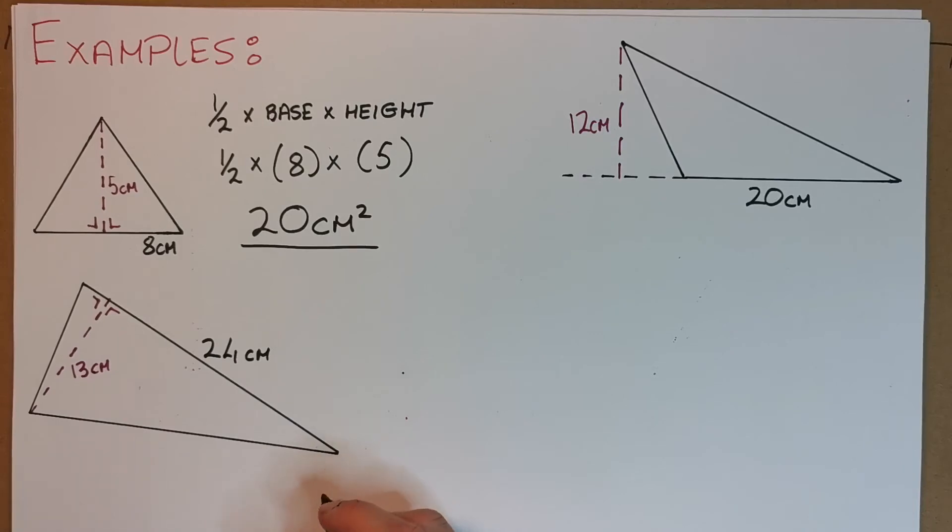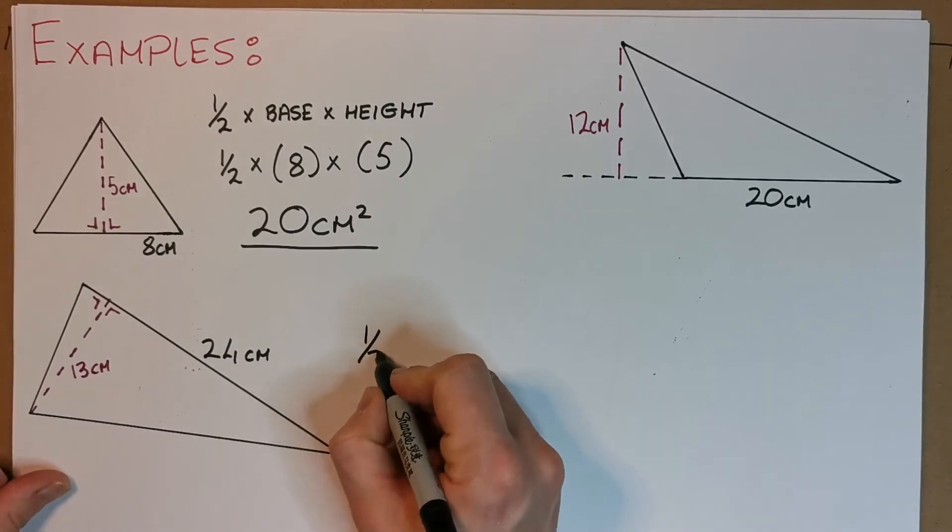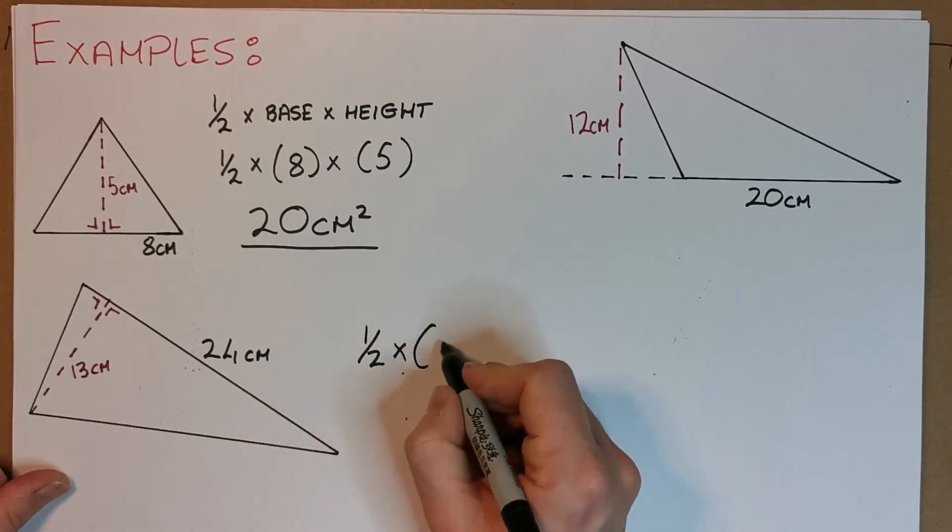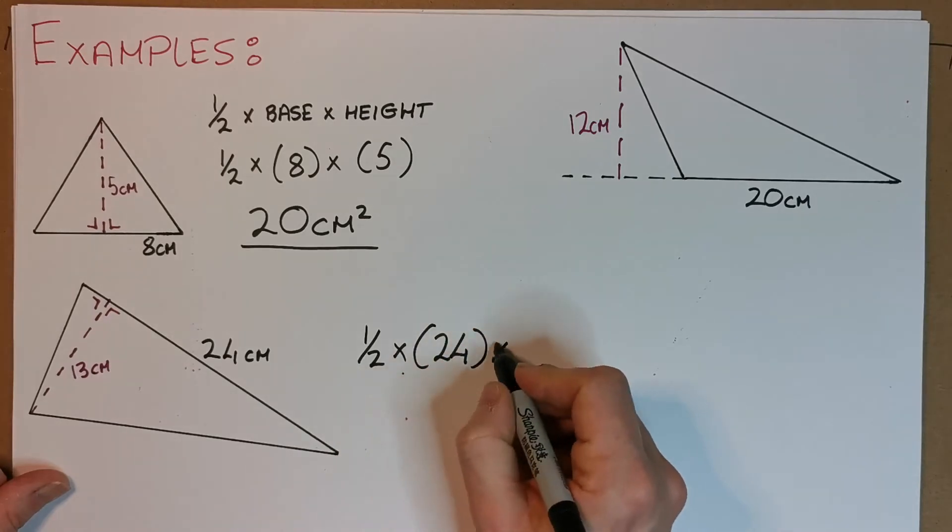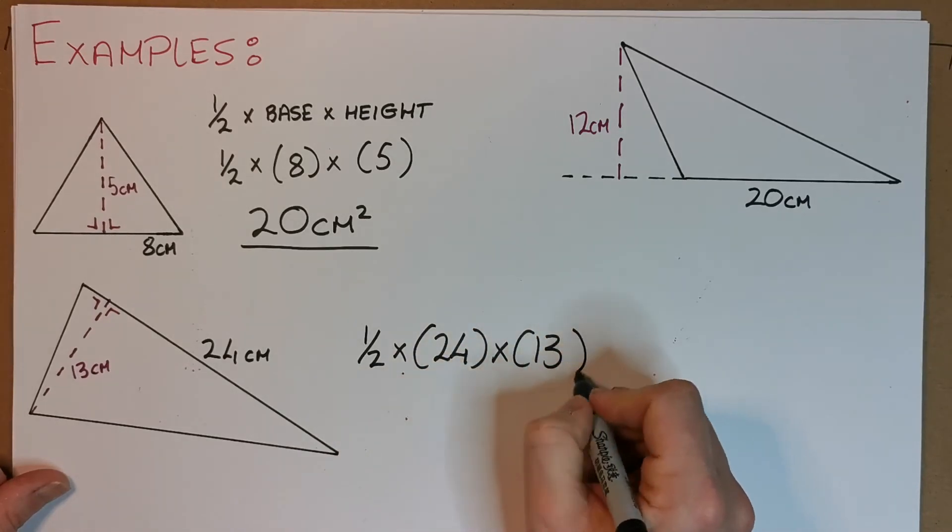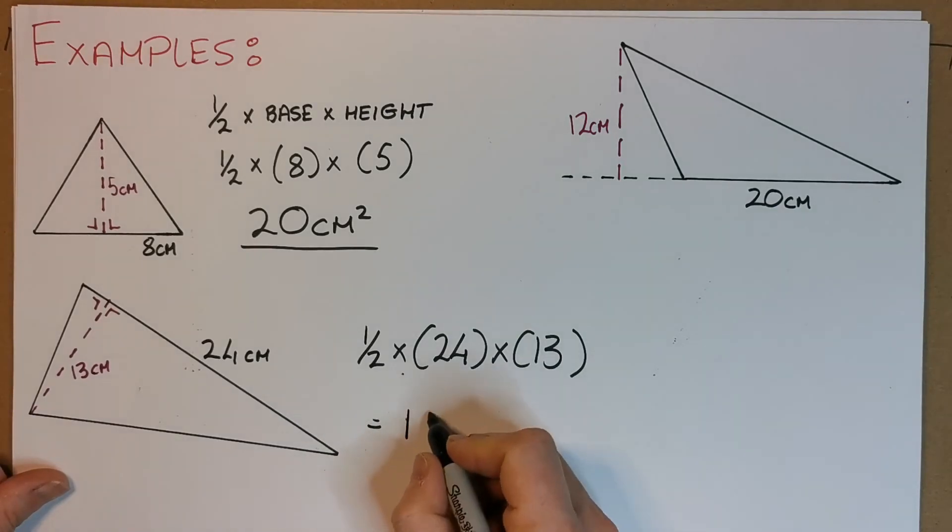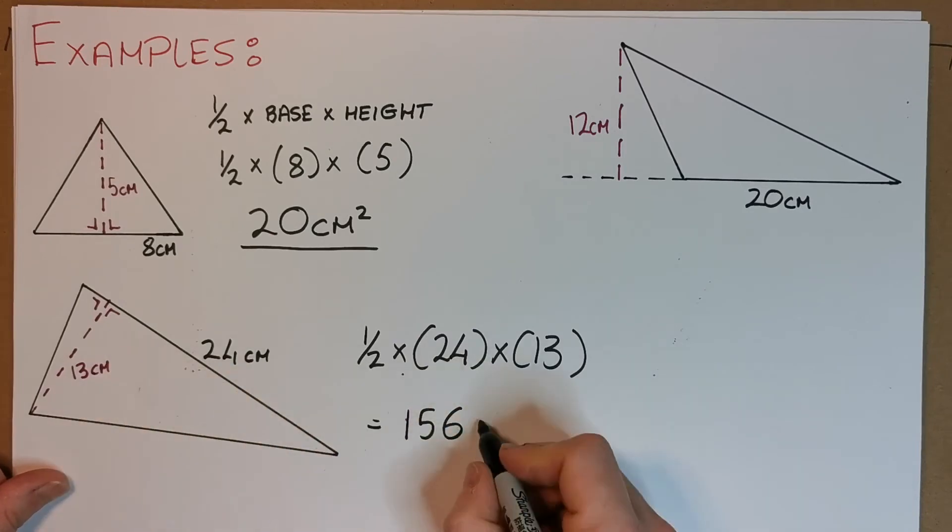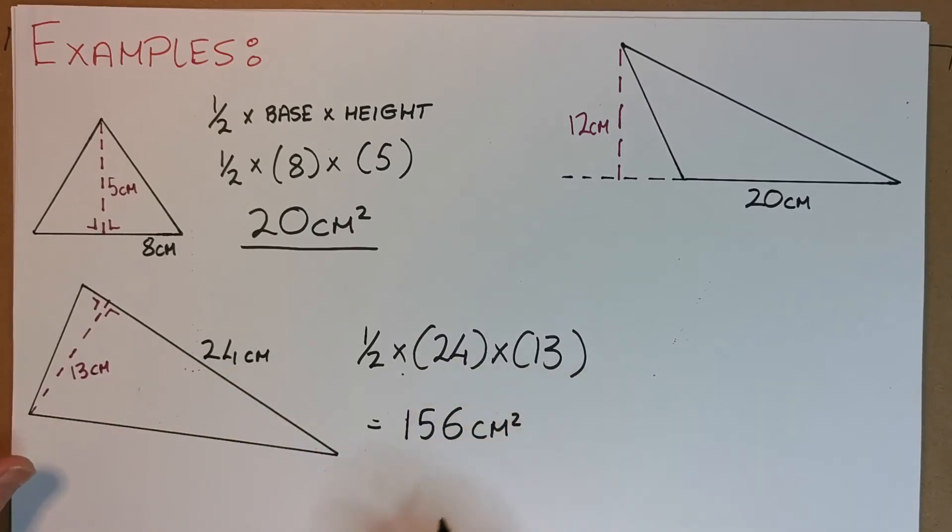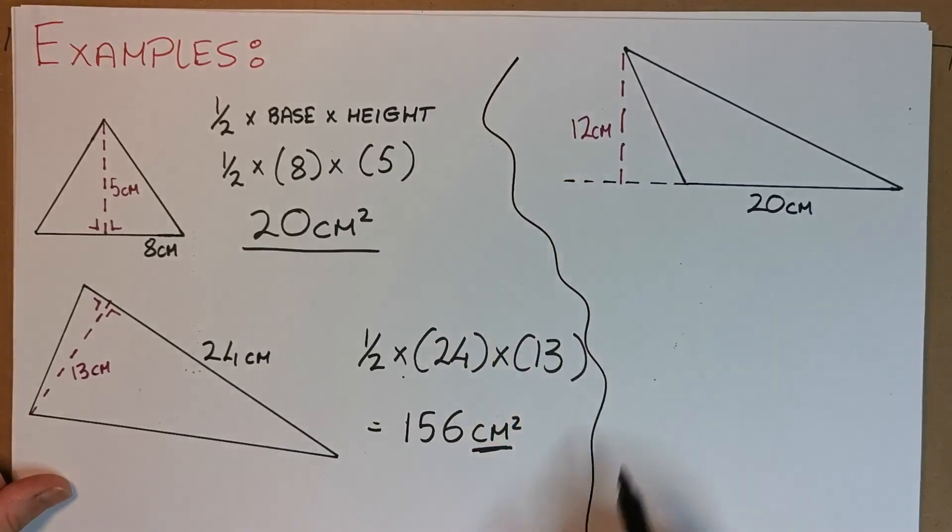So that's going to be a half, what's the baseline—24, and the height line is 13. A half of 24 by 13, if you want to try it on your calculator and see what you get, you should get 156. And of course the units were centimeters, so it's centimeters squared. I cannot stress this again—you cannot forget these.